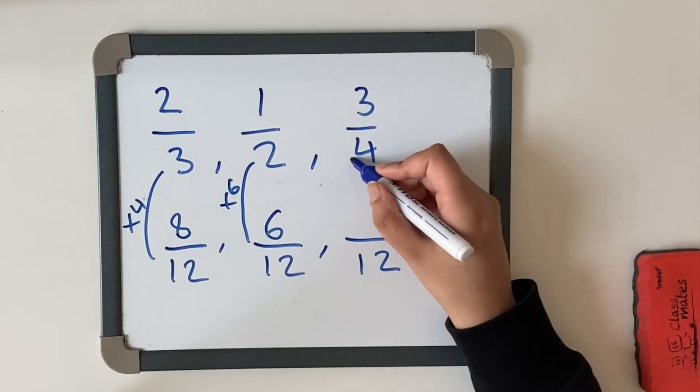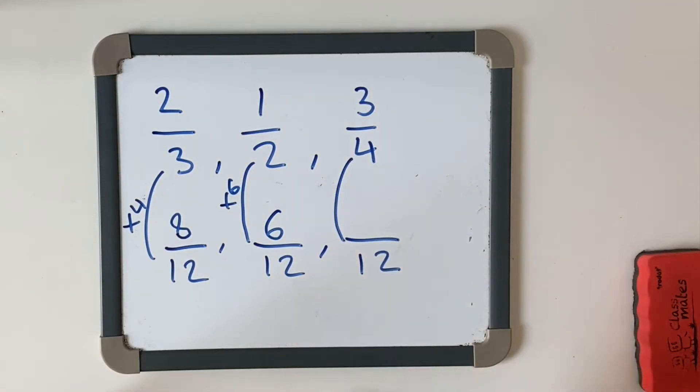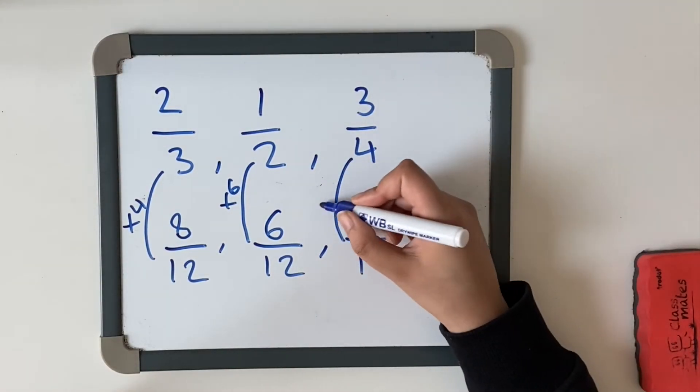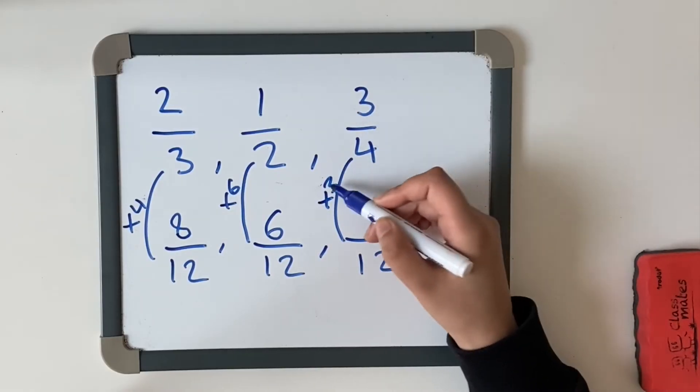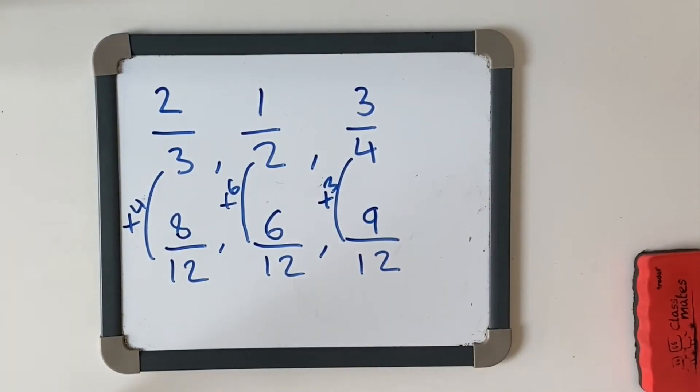And now for our final one, how many fours go into 12? Four, eight, 12. We're going to multiply that by three. Three times three equals nine. So now we've got them all into the same denominator, which is 12. And now we just need to order them from the least to the greatest.